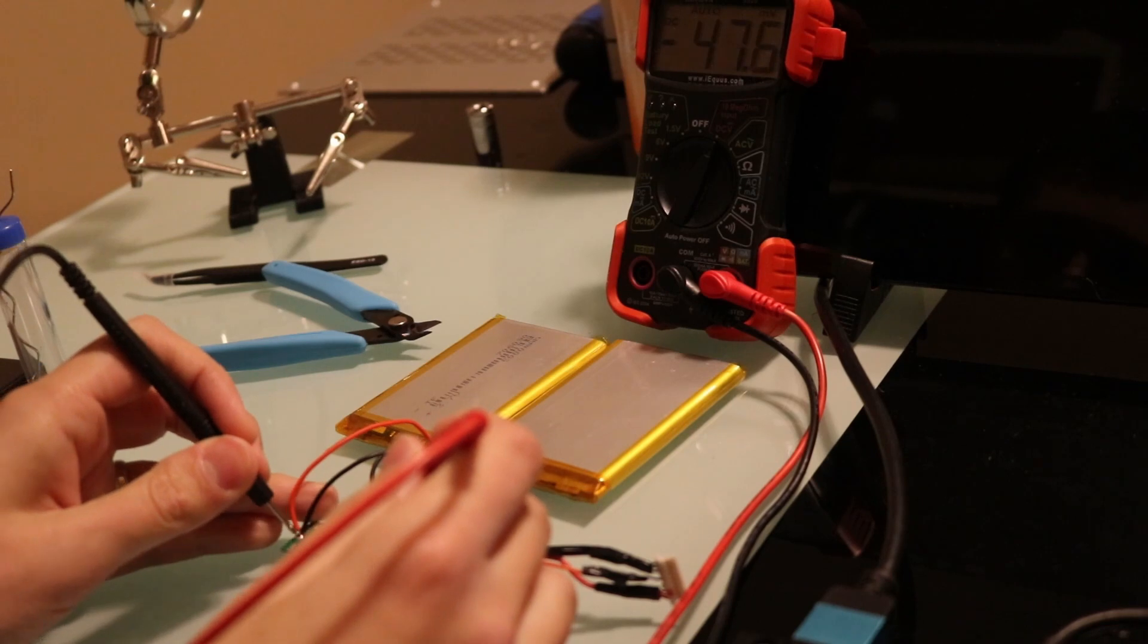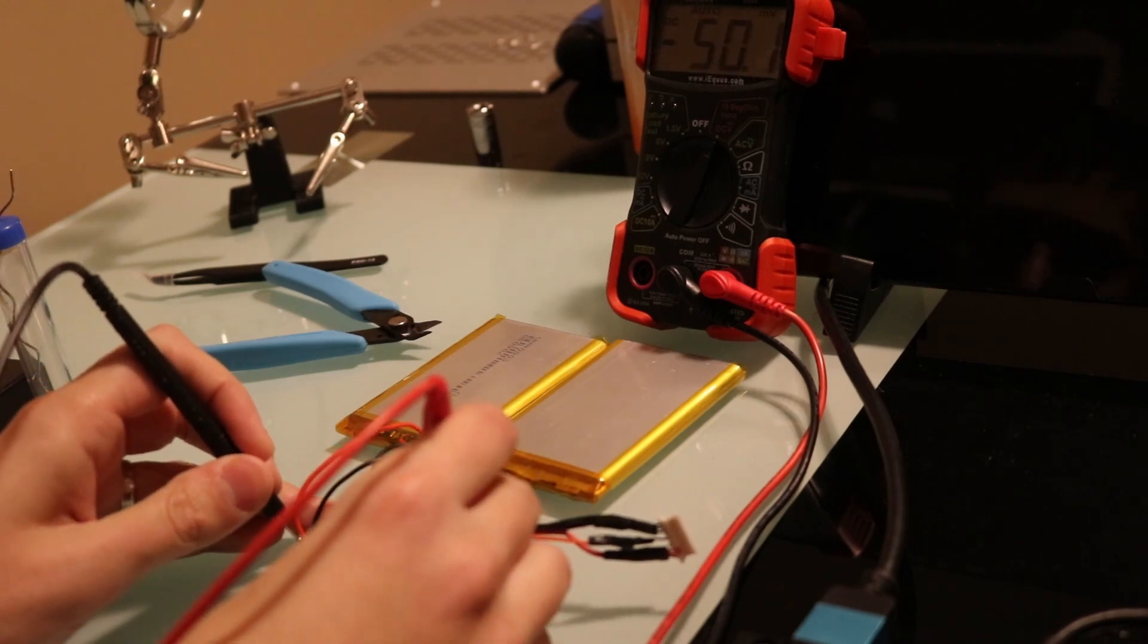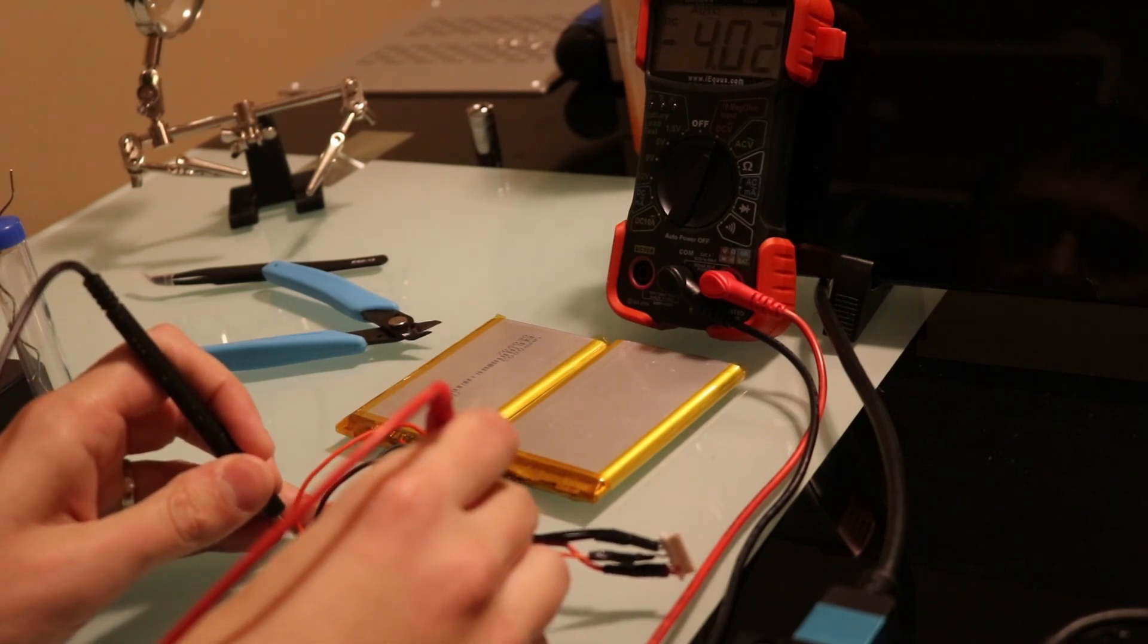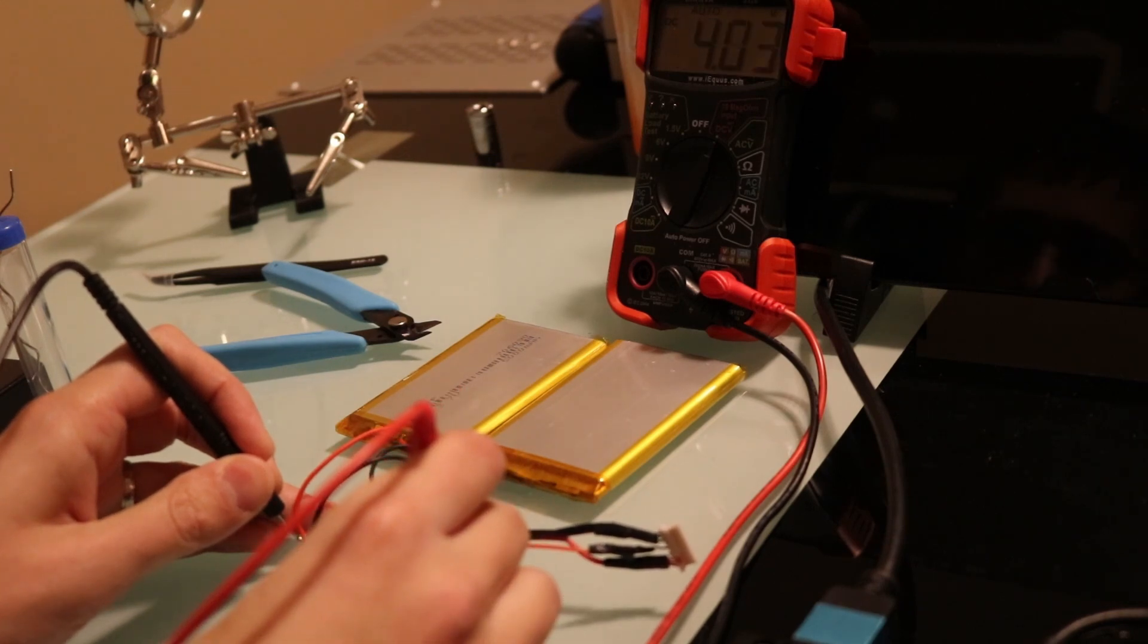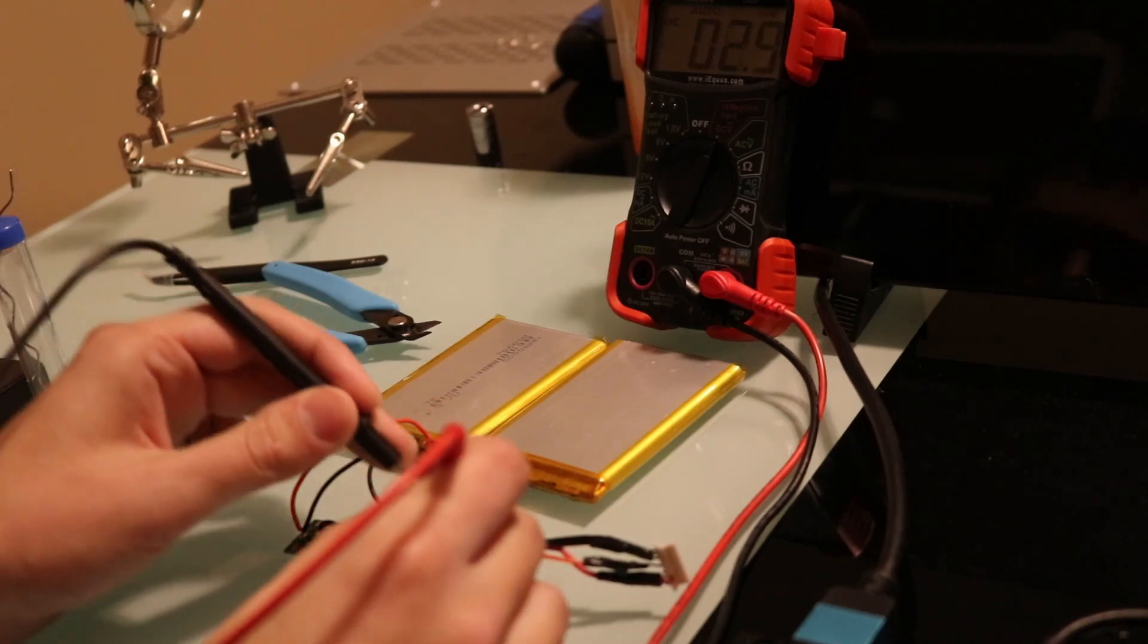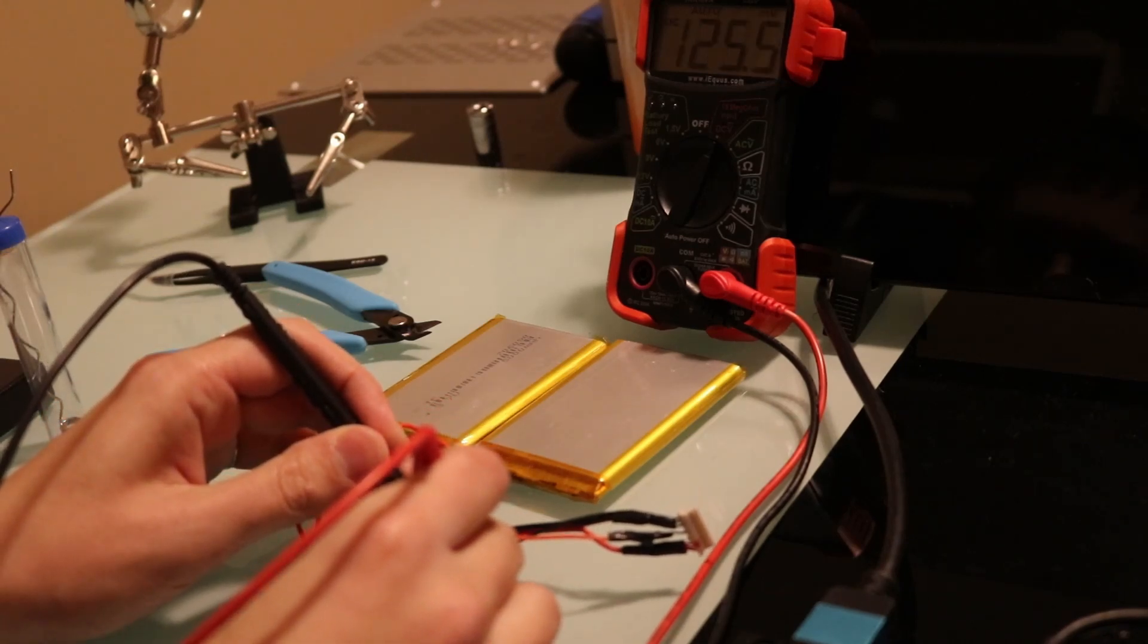Now that we've got everything assembled we're going to check the voltages across the batteries. Make sure to tape off all of your solder joints. We've got four volts on each of the batteries and then combined we should have about eight.